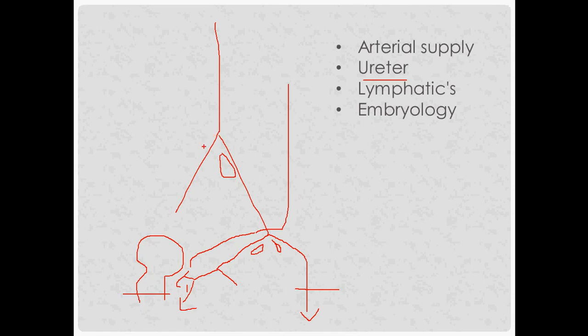The aortic bifurcation in terms of surface anatomy is right at the navel — the belly button. The corresponding dermatome is T10, remembered as 'belly butt-10.'